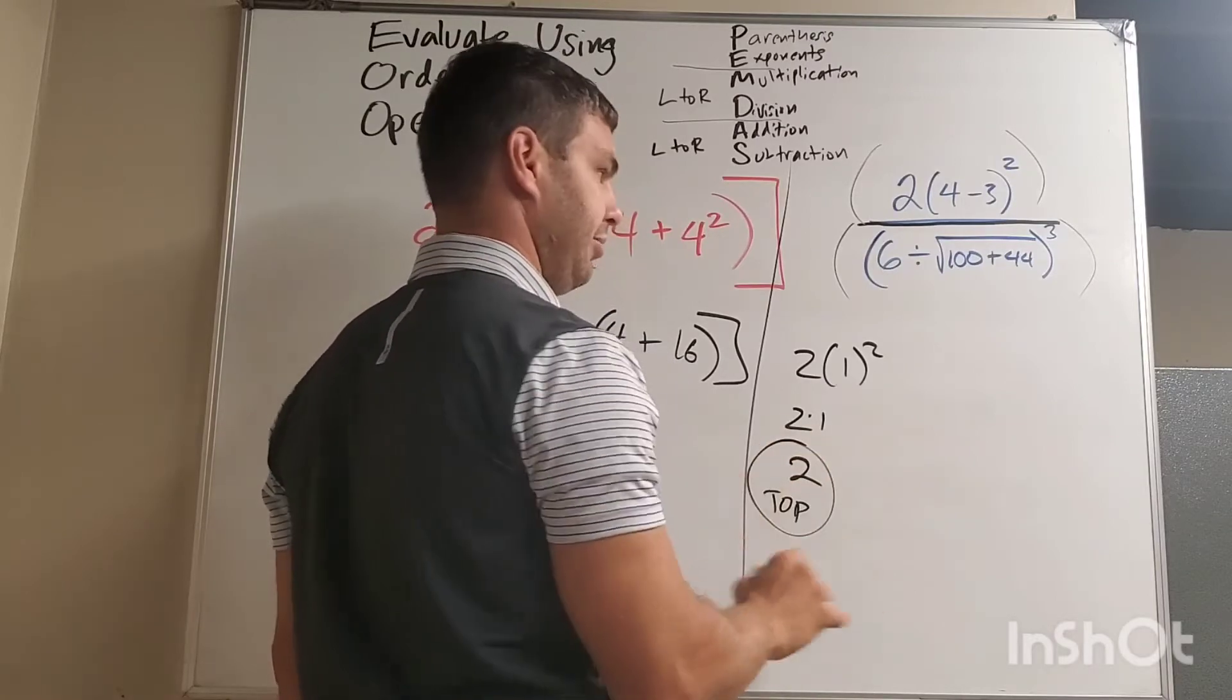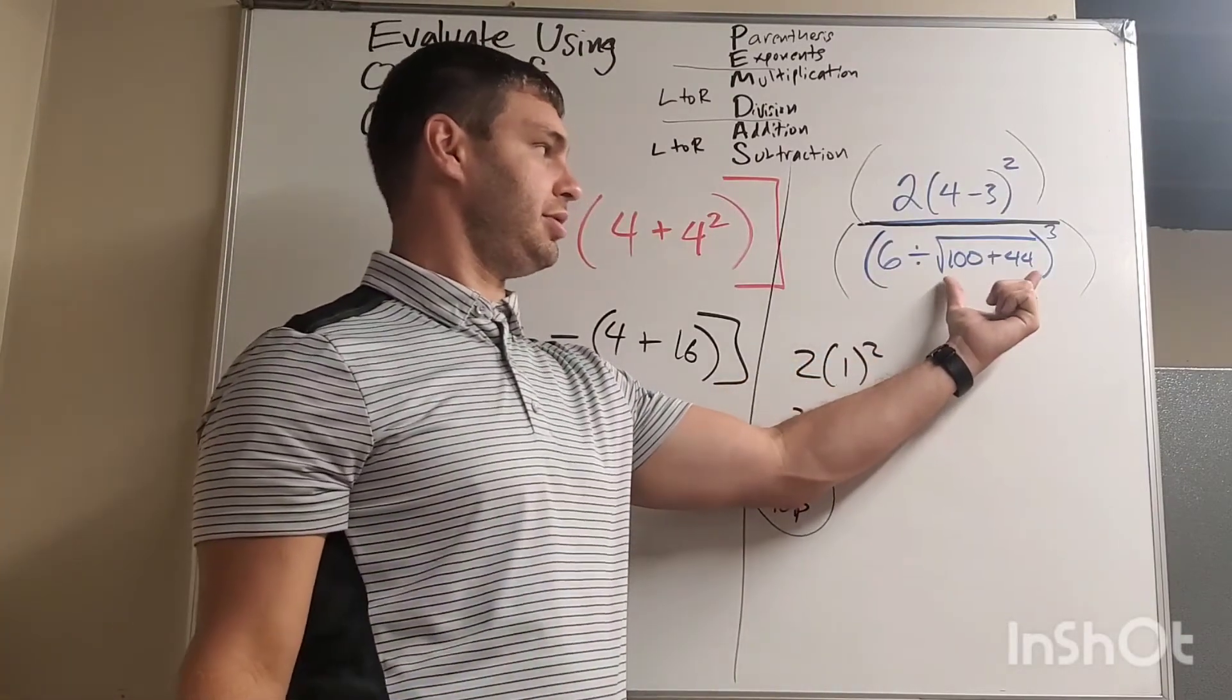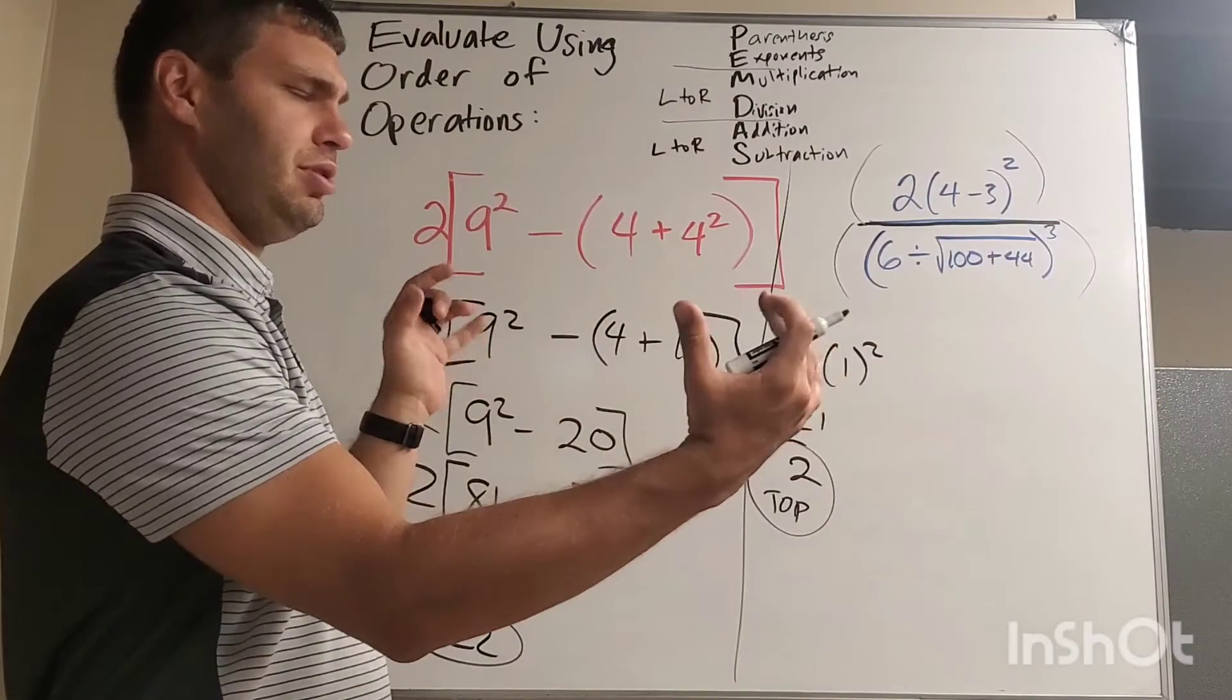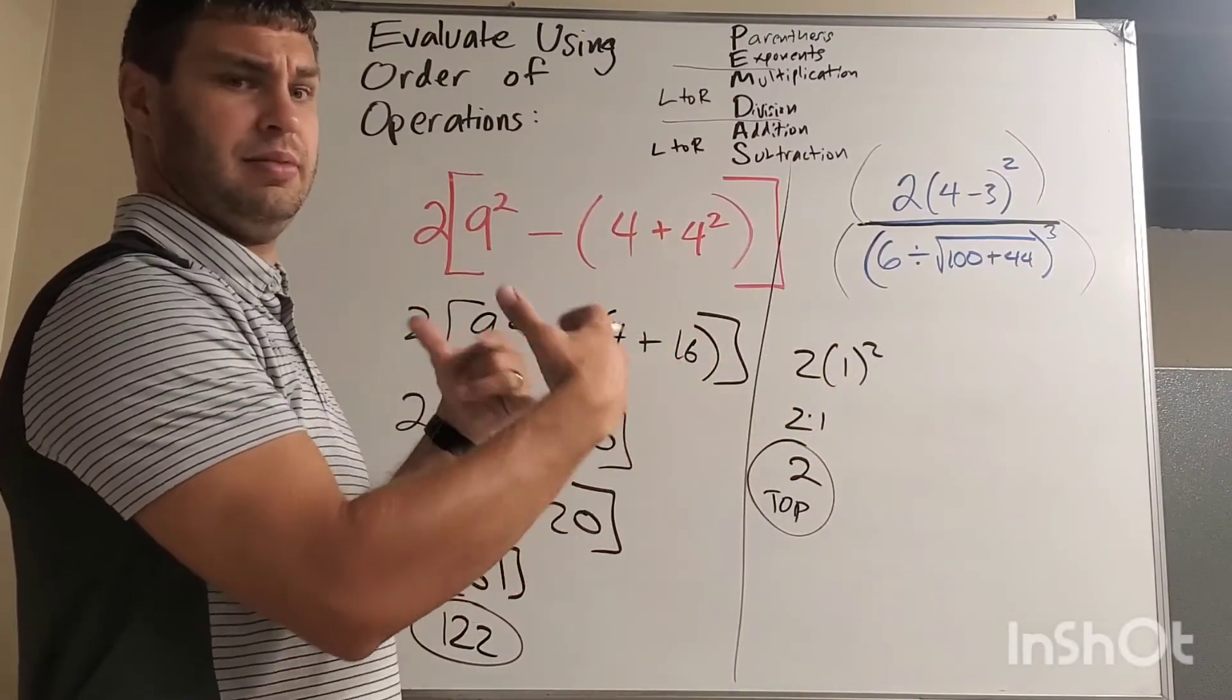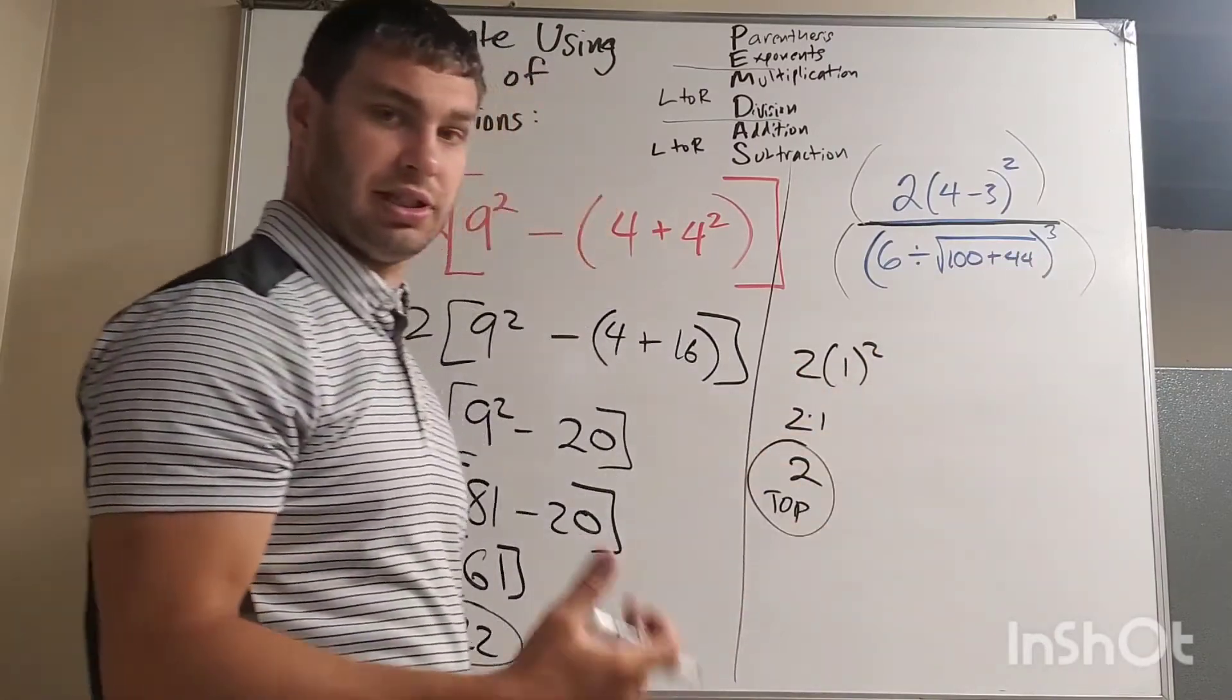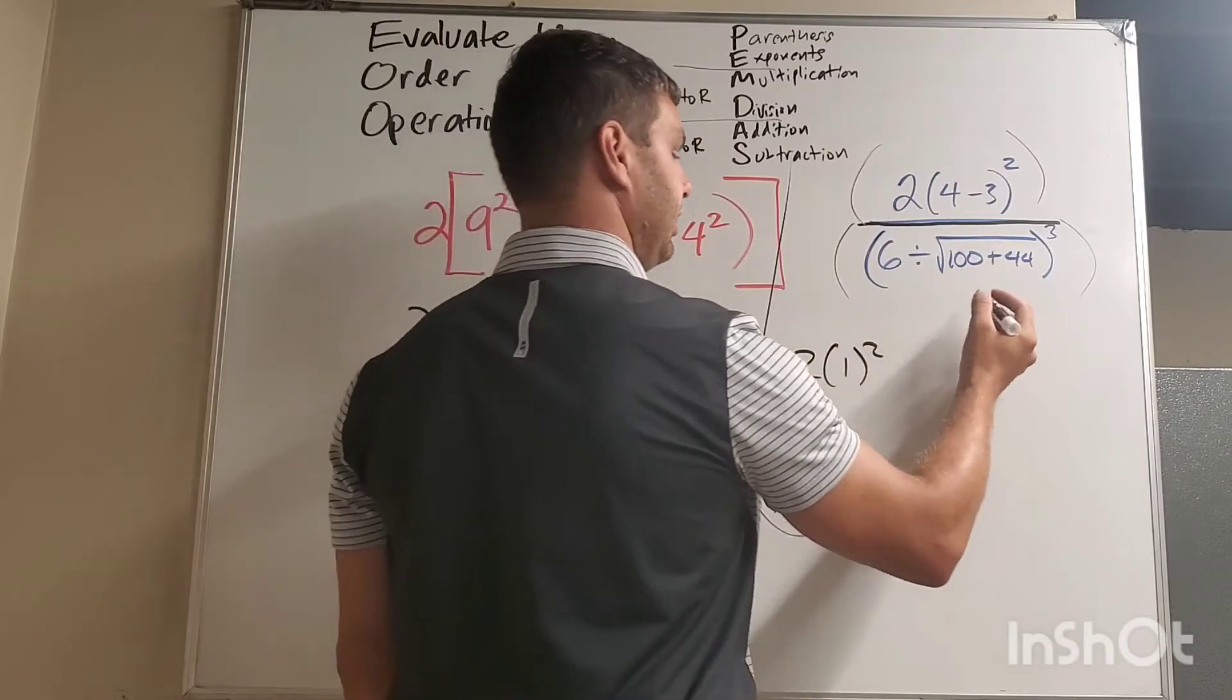We'll kind of keep that in mind. On the bottom, I have again another set of parentheses. I also have a square root. Square roots kind of also indicate parentheses. You have to do everything that's underneath them before you can take the square root. And underneath this, I have 100 plus 44, which is 144. Hopefully you can do that in your head. And the square root of 144 is 12.